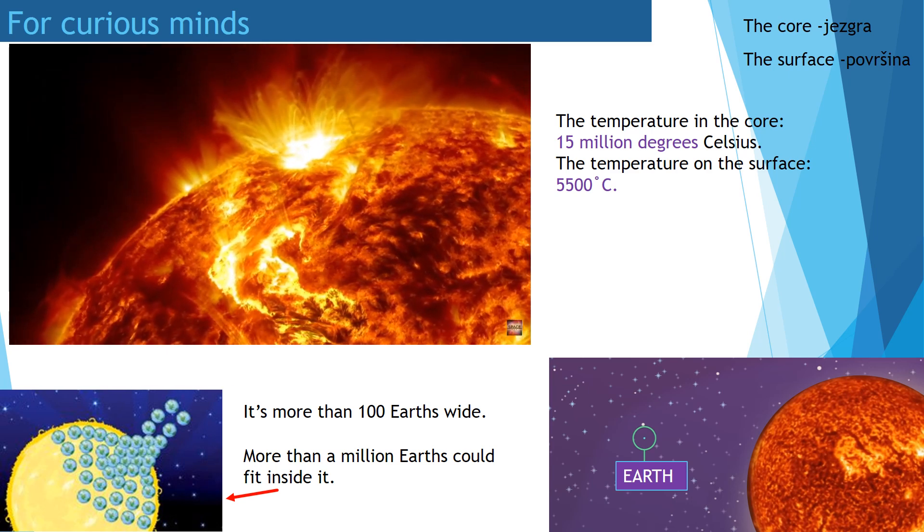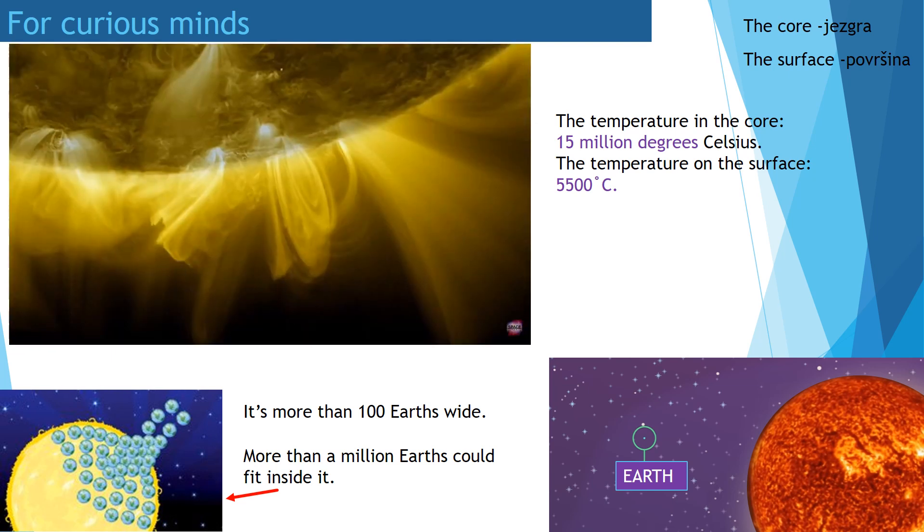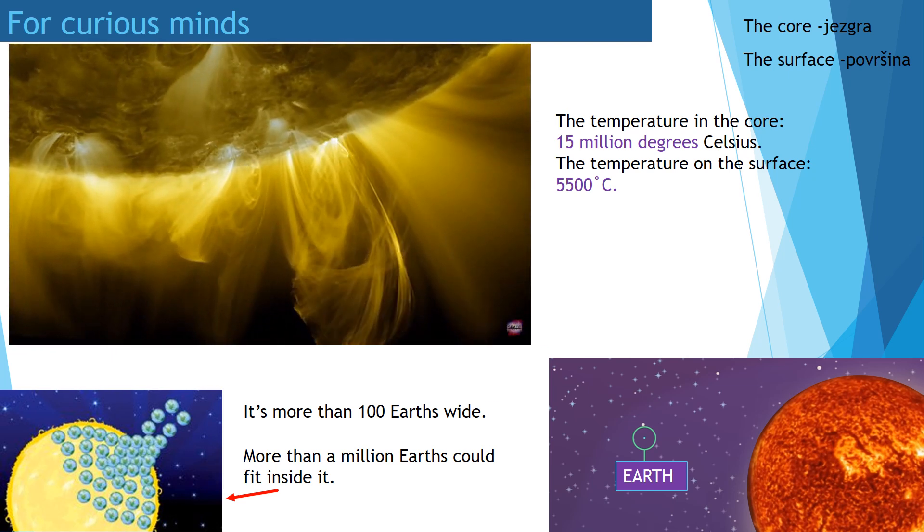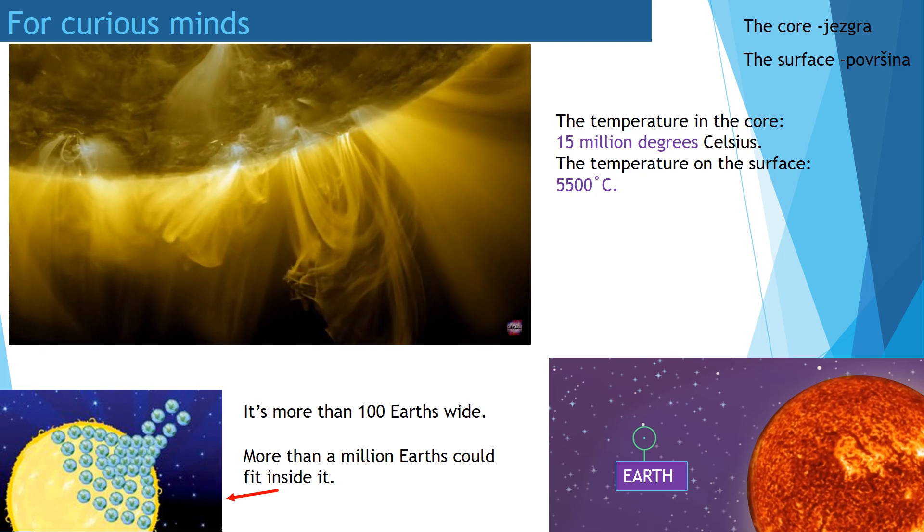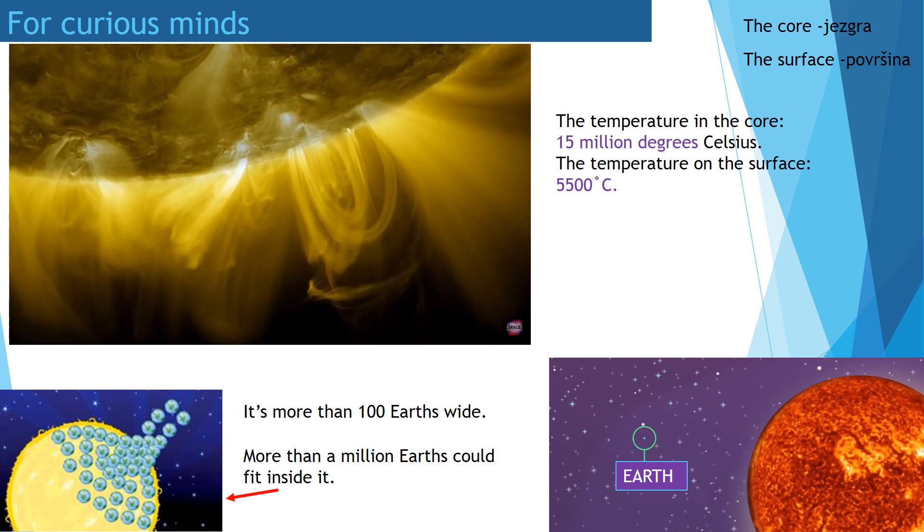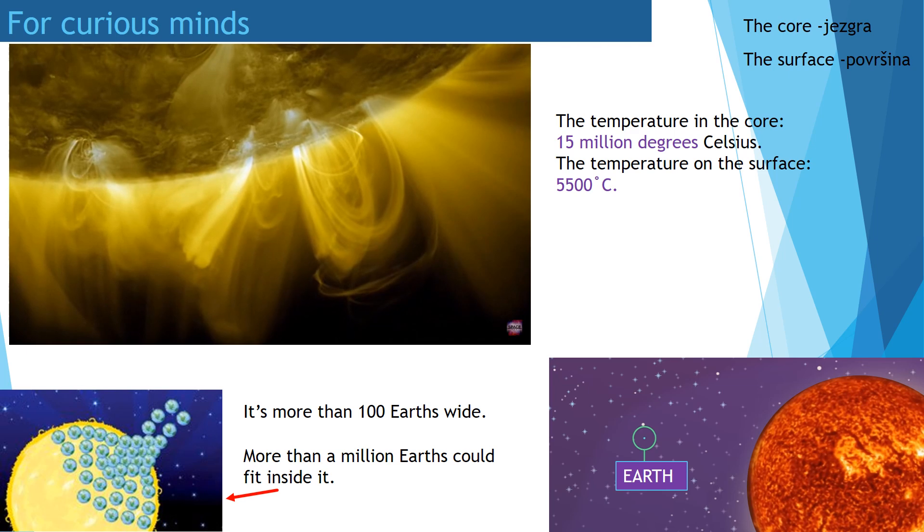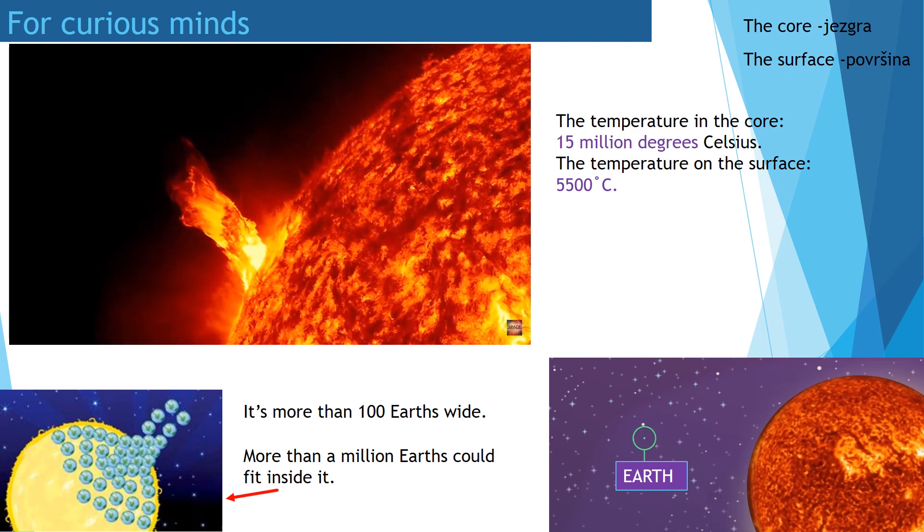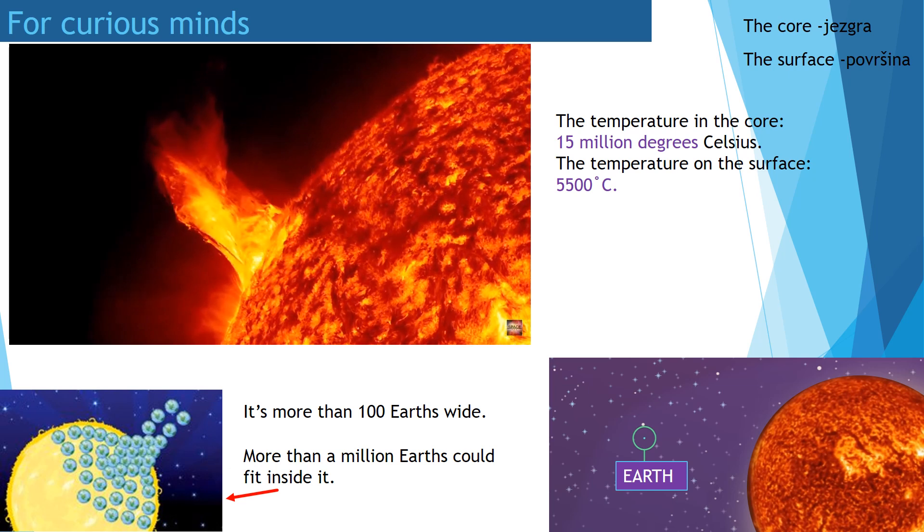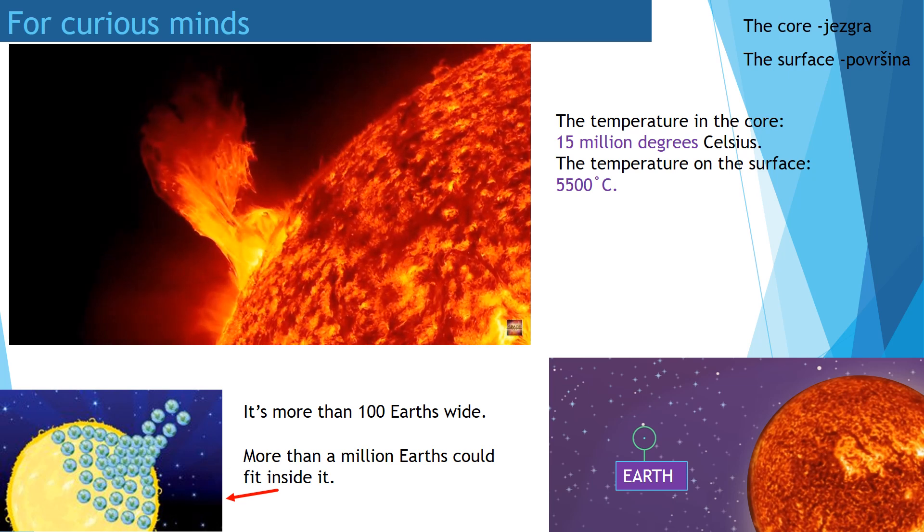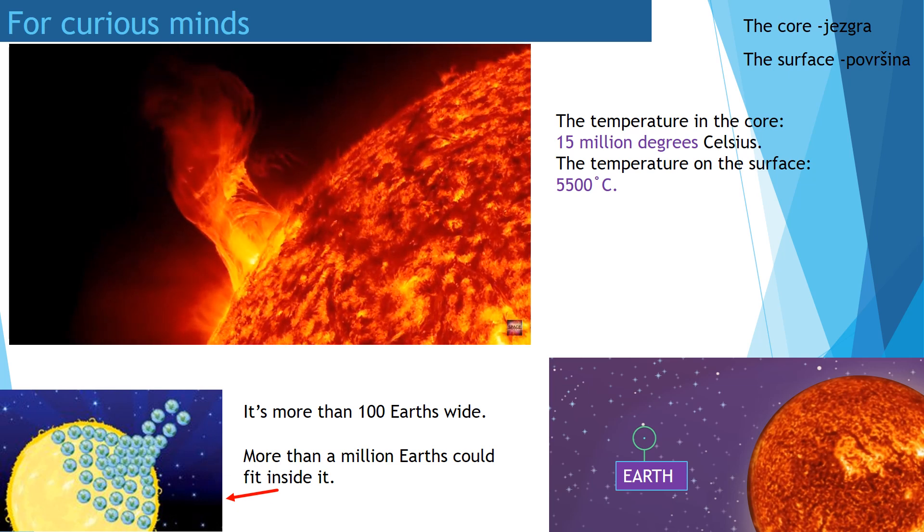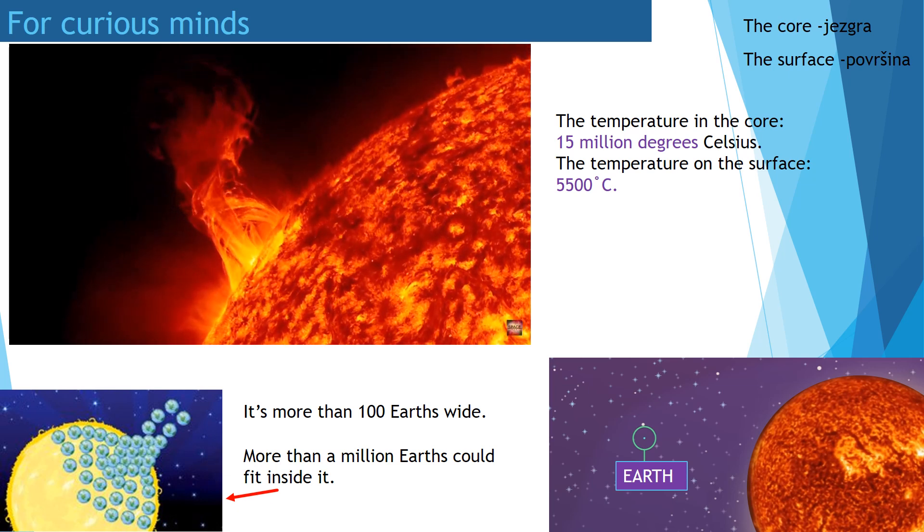The sun is quite big. It's huge. And it's more than 100 Earths wide, and more than a million Earths could fit inside it. Can you imagine that more than a million Earths we can put inside the sun? That's how big the sun is.